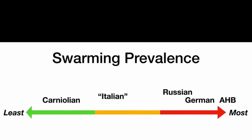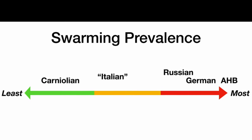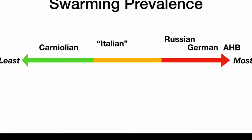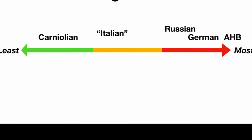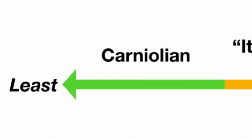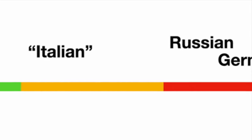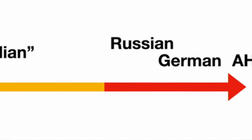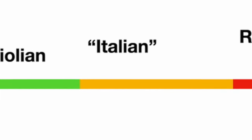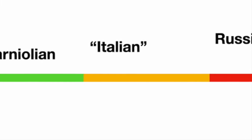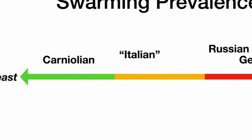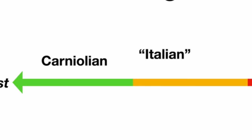Genetics-wise and subspecies-wise, sometimes the best tool for swarm prevention is having the right bees. Certain subspecies and hybrid lines are more or less swarmy than each other. Carniolians are considered the least likely to swarm, while Africanized bees swarm at the drop of a hat. Italians were considered a less swarmy line, but in my experience working with them, I really can't say they are swarm resistant. Switching to one of the less swarmy stocks is a pretty surefire way to reduce swarming pressure in your apiary long term.